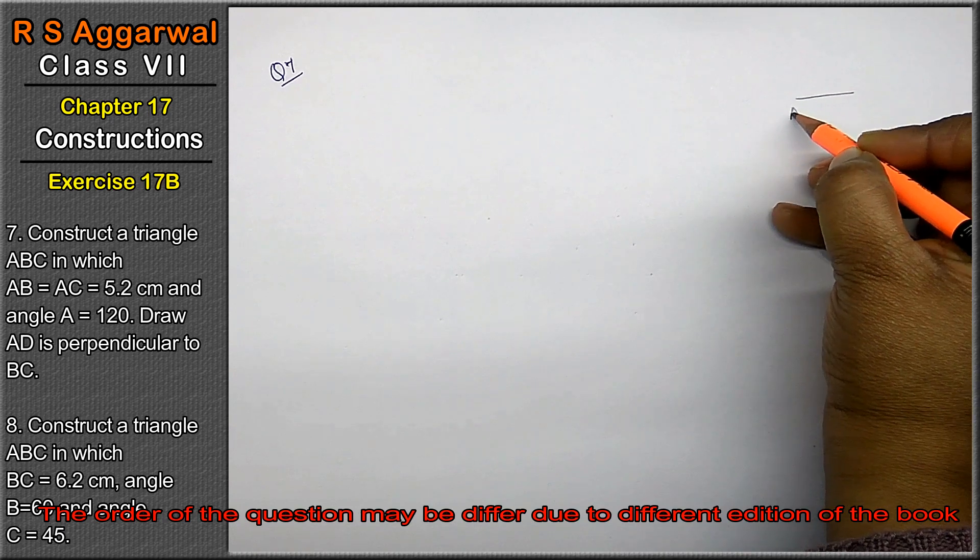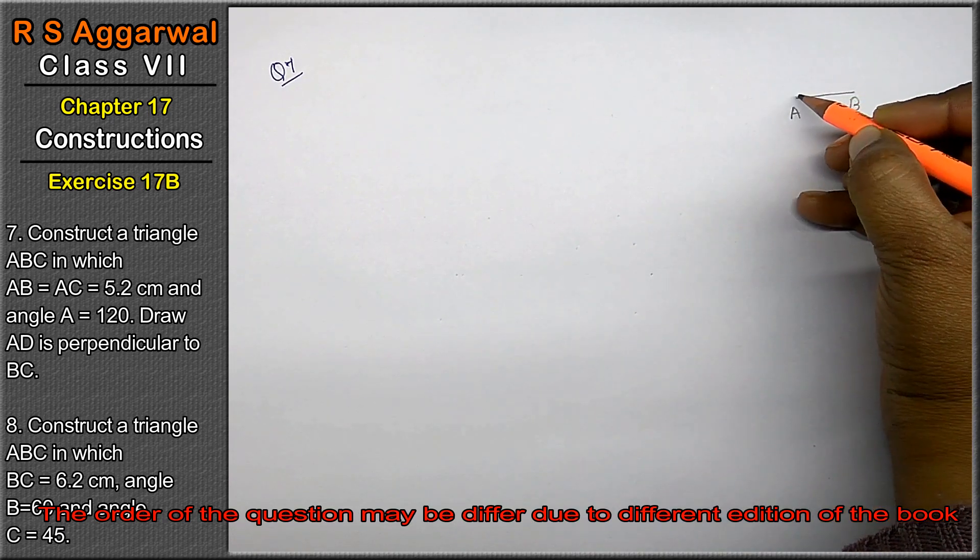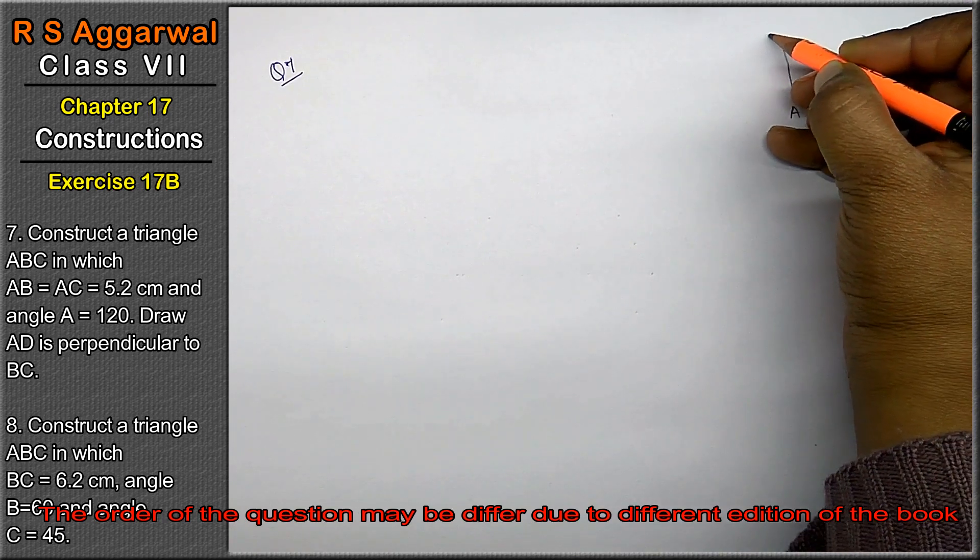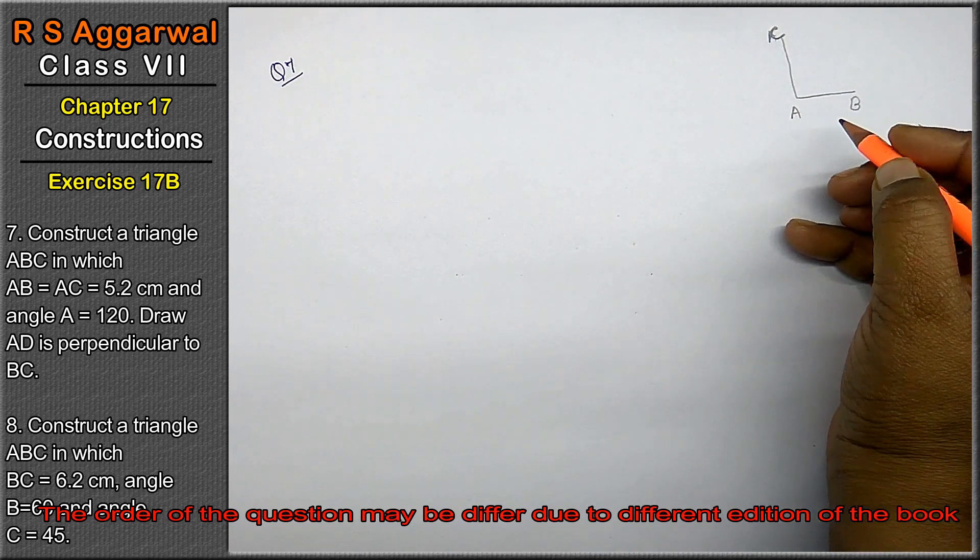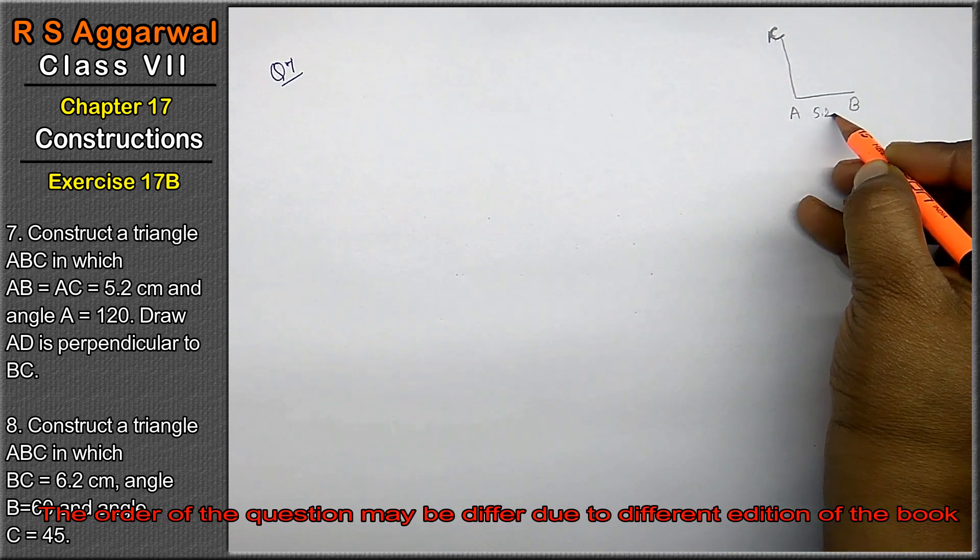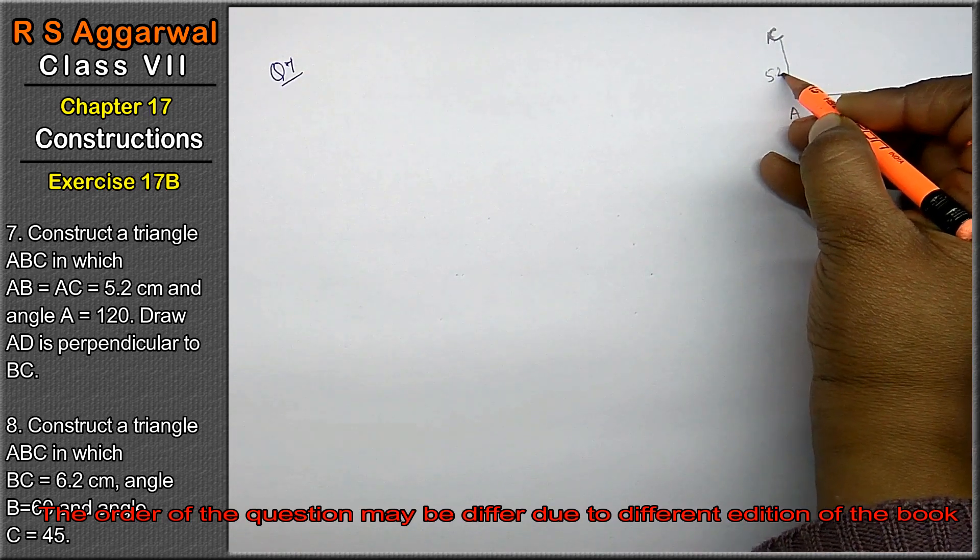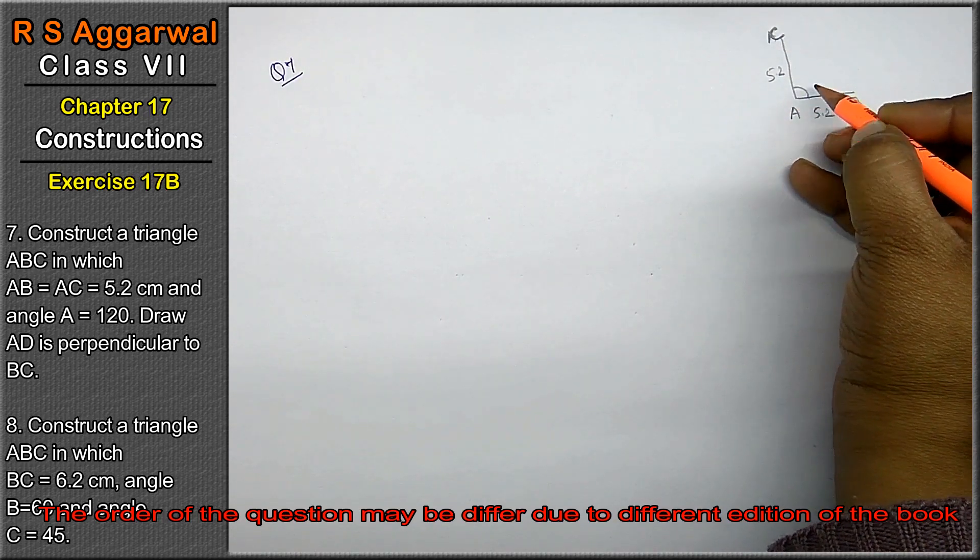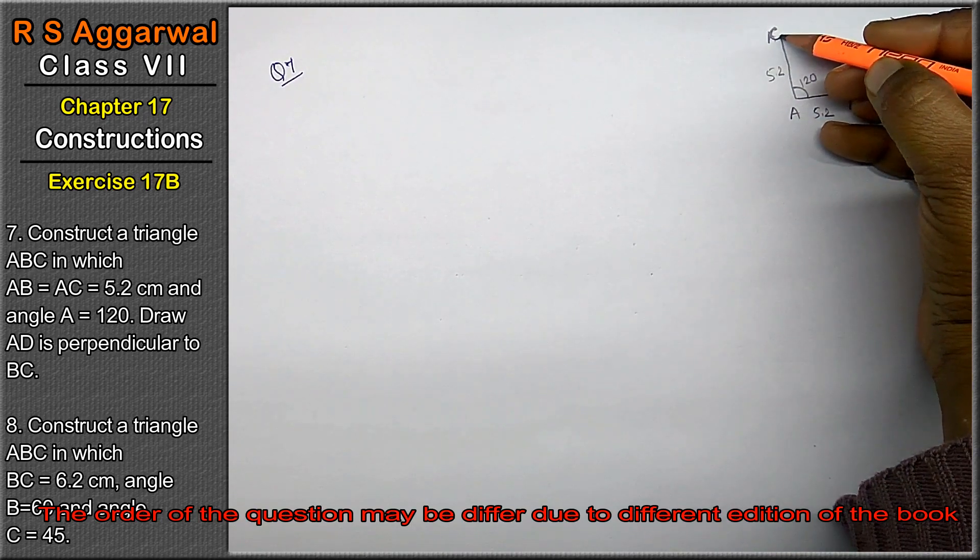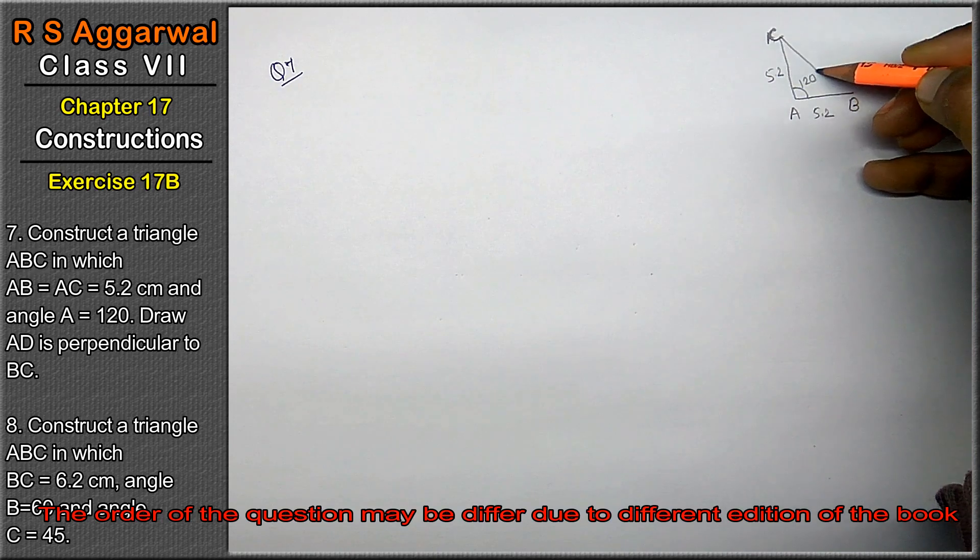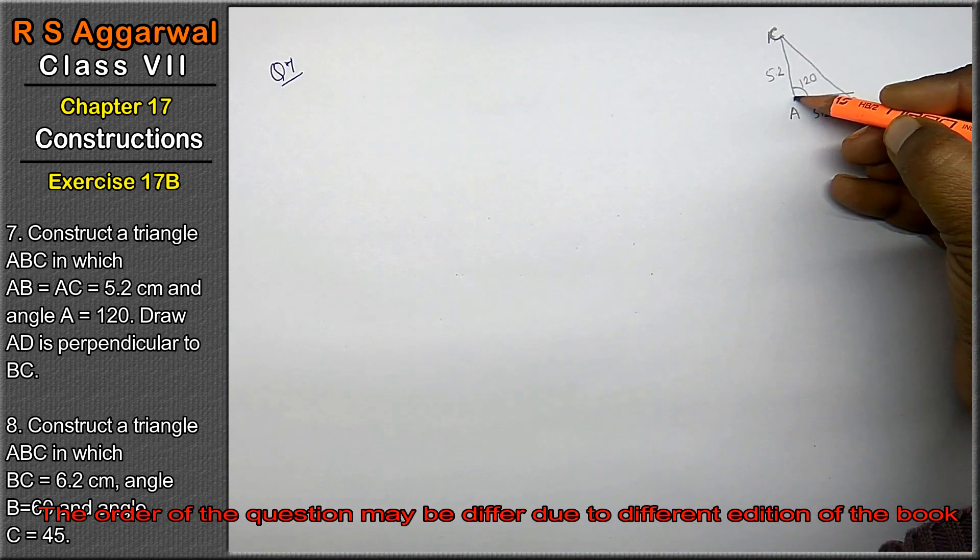This is AB and AC. This is 5.2 cm. Angle A is 120 degrees. Draw AD perpendicular to BC.